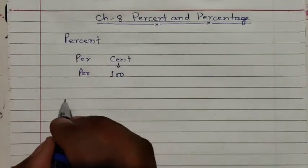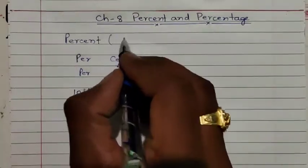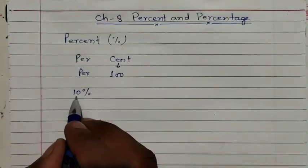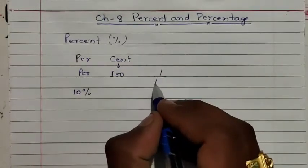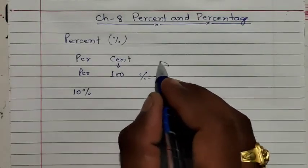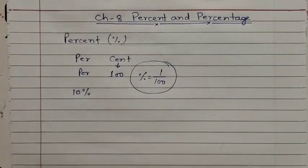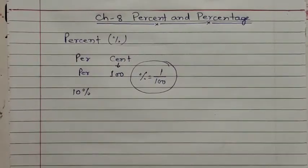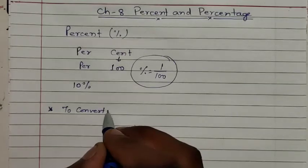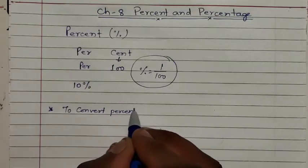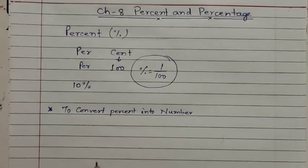Now let us take an example: ten percent. This is the symbol of percent, and we read it as ten percent. The meaning of percent is per hundred, which means one by hundred. So percent means one by hundred — this is something you have to learn. I will now teach you two general steps. The first one is to convert percent into a number.